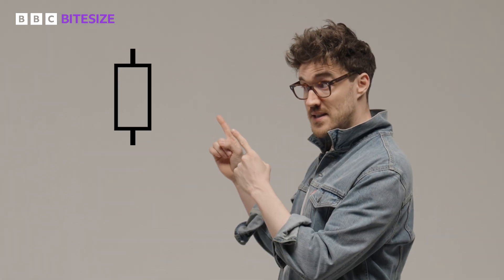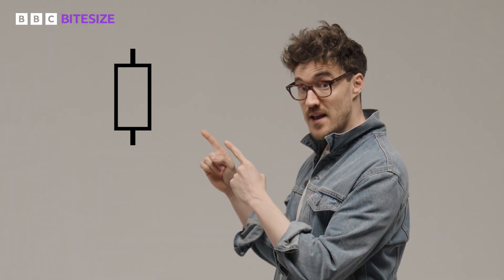Now we've got the current flowing, let's talk resistance. Imagine you're trying to run through a crowded hallway full of people — those people are like resistance, slowing you down. In electrical terms, resistance is the opposition to the flow of the current. This tiny component is a resistor, and its job is to limit the current flowing through a circuit. The higher the resistance, the less current actually gets through.